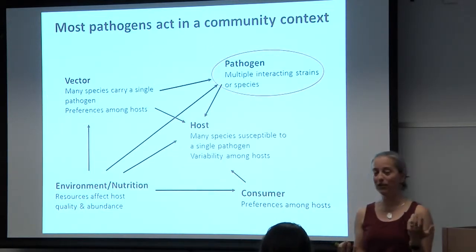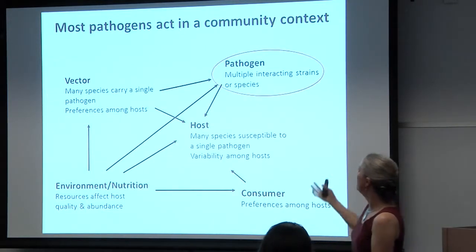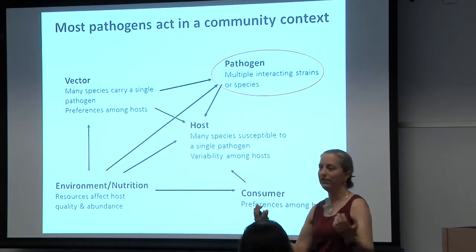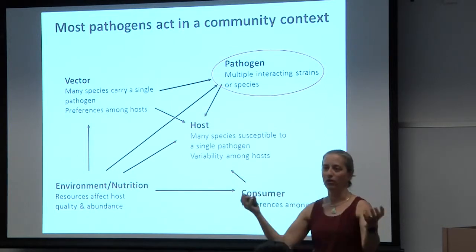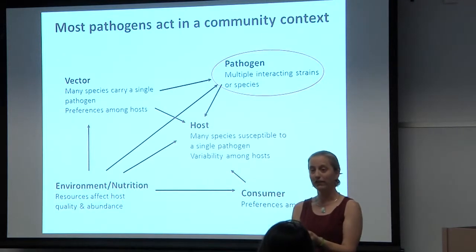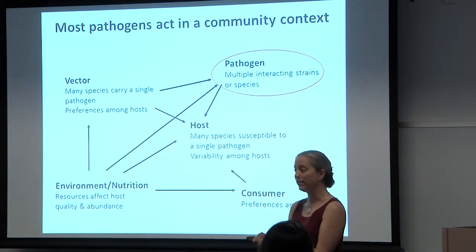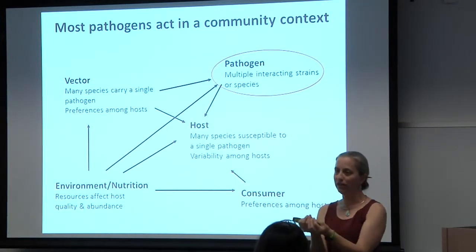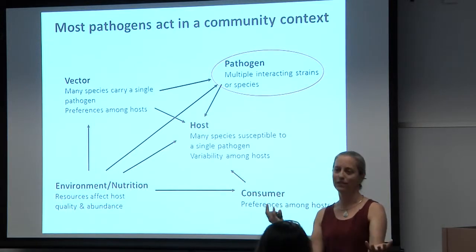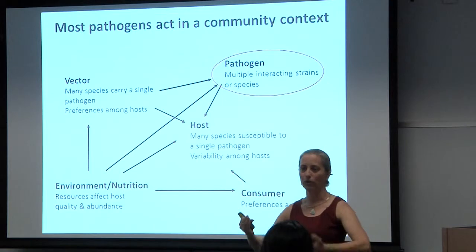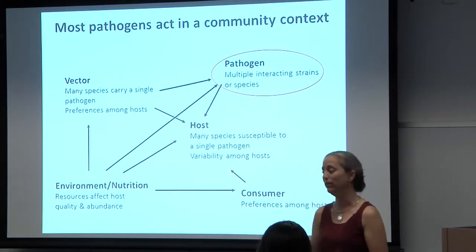Then there's the pathogen being carried by this vector. There can be multiple interacting strains within a host, or whole species of different pathogens — for example, viral and bacterial pathogens infecting the same host, and in some cases the same host cell. There are species interactions that can take place within that host cell context, but also at the scale of the host, with upregulating or downregulating various defense pathways.